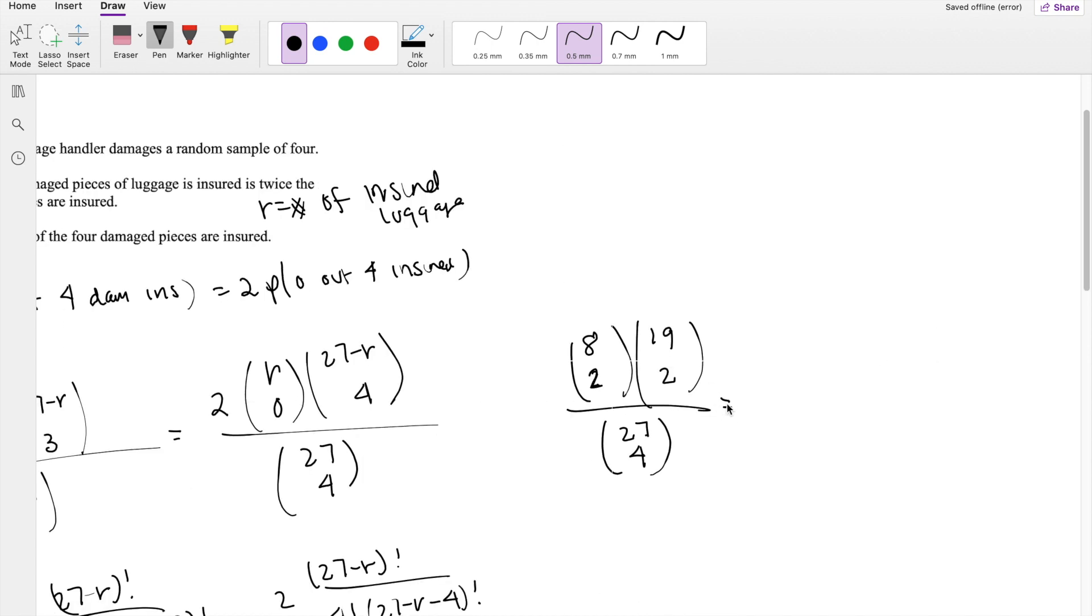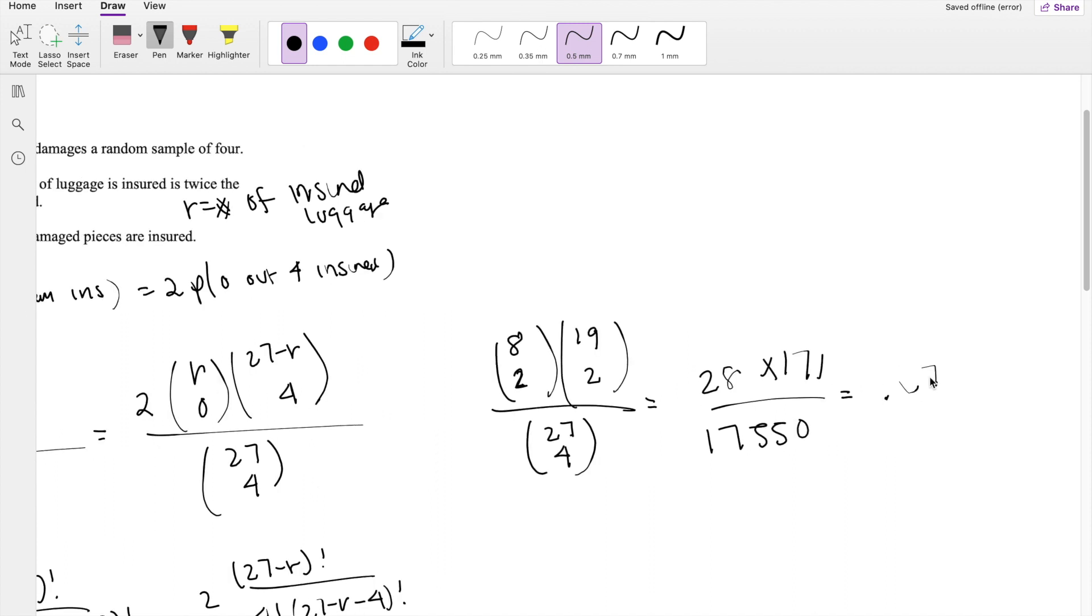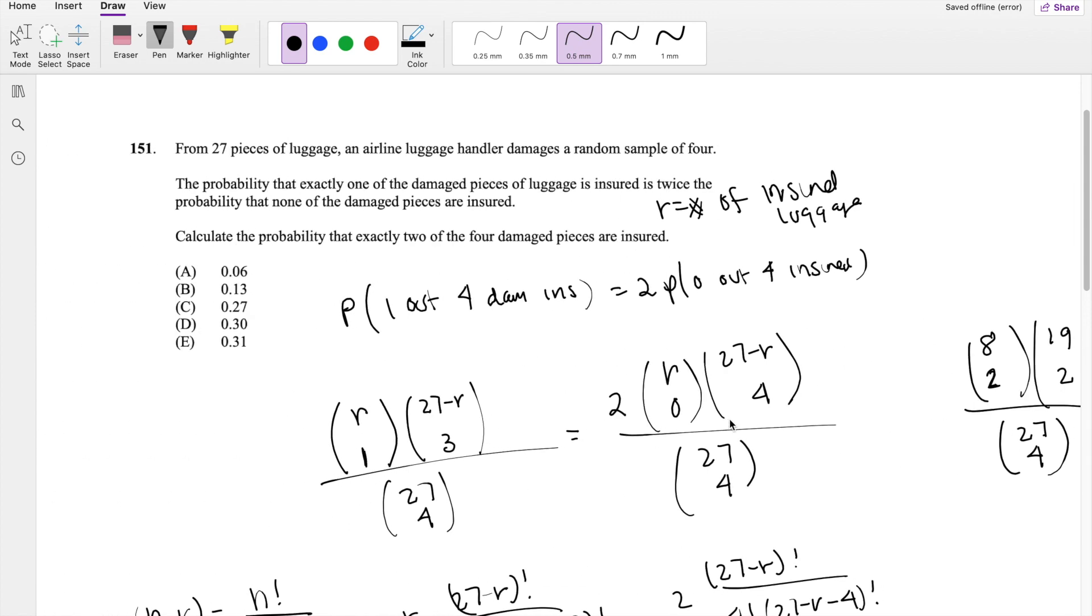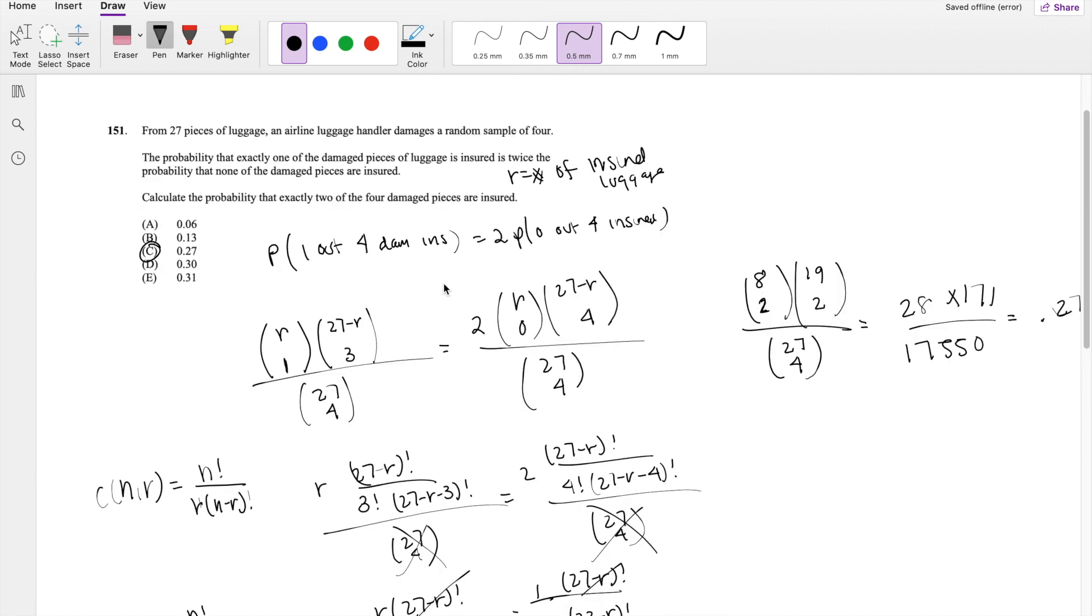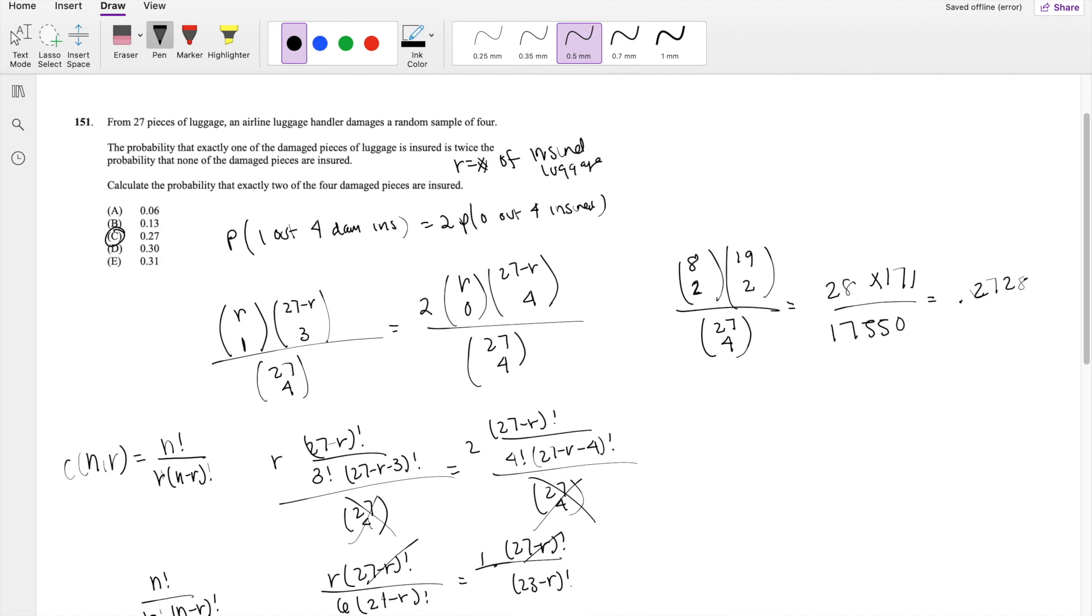So then this is equal to 17550. The numerator is 171 times 28. So this is equal to 0.2728, which is our answer C. If you guys have any questions, please leave them down below. Otherwise, as always, make sure you like, subscribe and share. Bye!